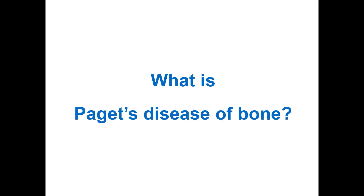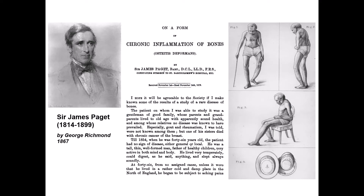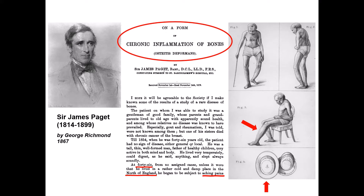So what is Paget's disease of bone? It has been named after Sir James Paget, an eminent Victorian surgeon and physician who described this condition in 1876 after he encountered a 46-year-old gentleman from the north of England who presented with aches and pains and over the years developed significant bowing deformities of his long bones. His skull also increased in size. Because of the bony pain, swelling, and increased warmth, Sir James Paget thought this was chronic inflammation of bones, or osteitis deformans in Latin.